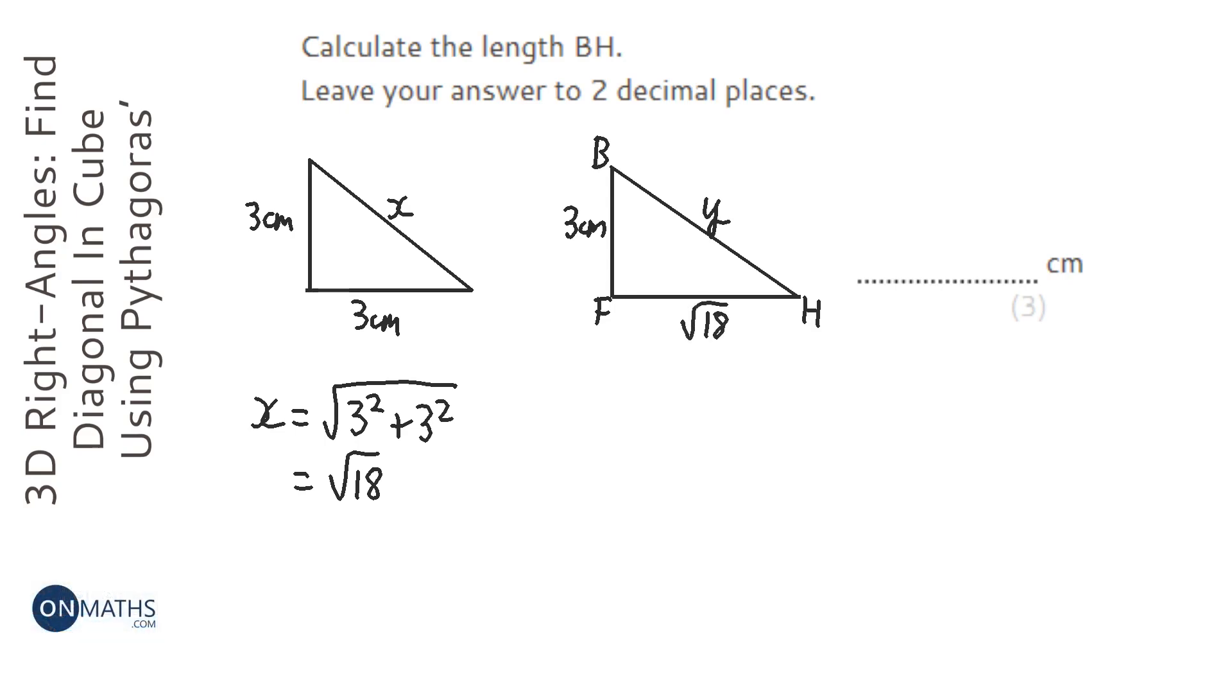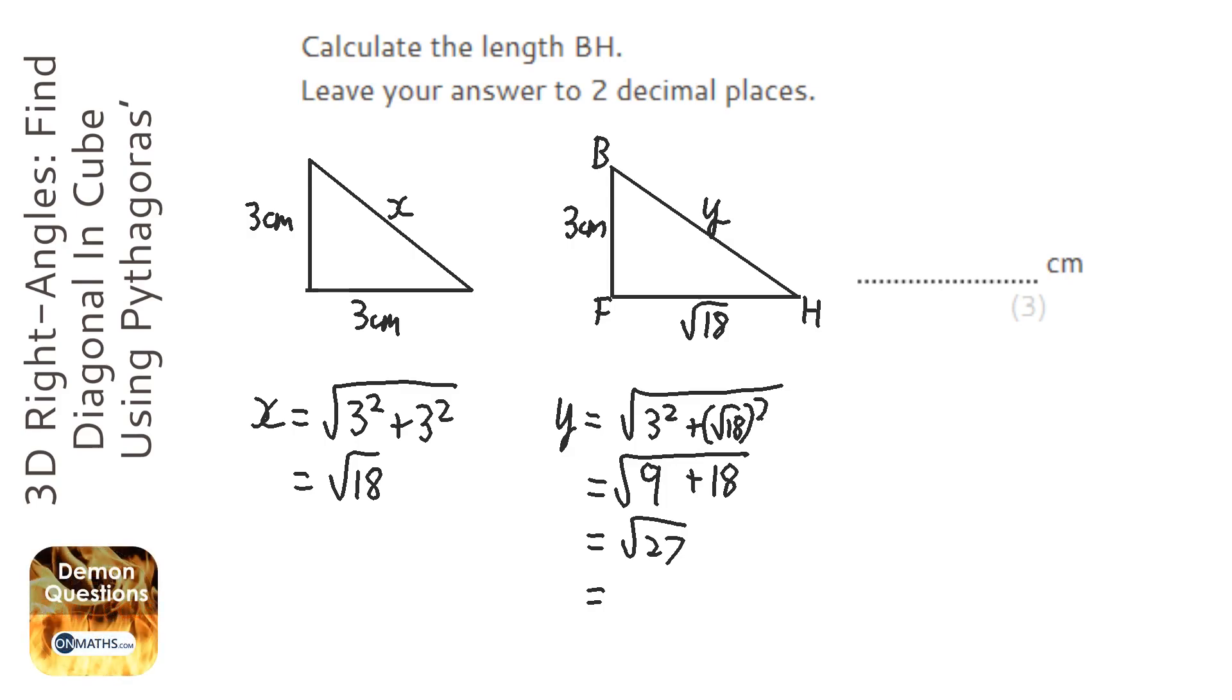Okay, so to work out Y, we're going to square root 3 squared plus root 18 squared, which equals 9 plus 18, so square root 9 plus 18, which equals square root 27, which, let's use a calculator, root 27, equals 5.196...